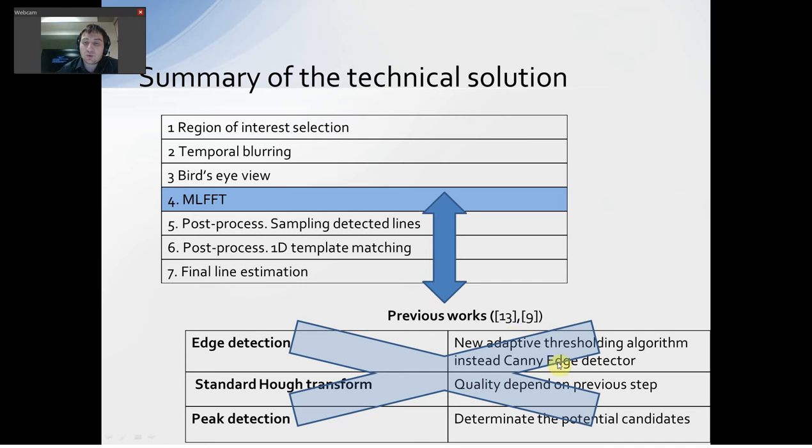In the previous work number nine, edges were detected via Canny edge detector, standard Hough transform, and peak detection to determine potential candidates to be aligned. In work number thirteen, the step of edge detection has been replaced. Instead of Canny edge detection, they use new adaptive thresholding algorithm. All of this is because Hough transform input is a binary image, so we need to do something with a grayscale image.